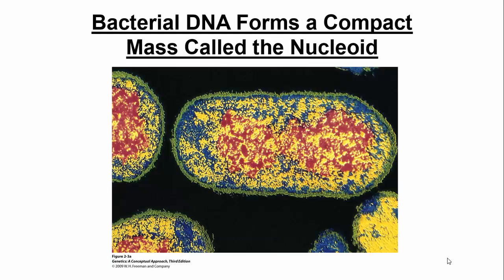If we look at a scanning electron microscope image of a bacterium, color-coded, you can see the DNA is highlighted in red, forming this supercoiled structure. The proteins associated with DNA are depicted in yellow, and the cell wall is stained in green. All of these are artificial colors put on the image.